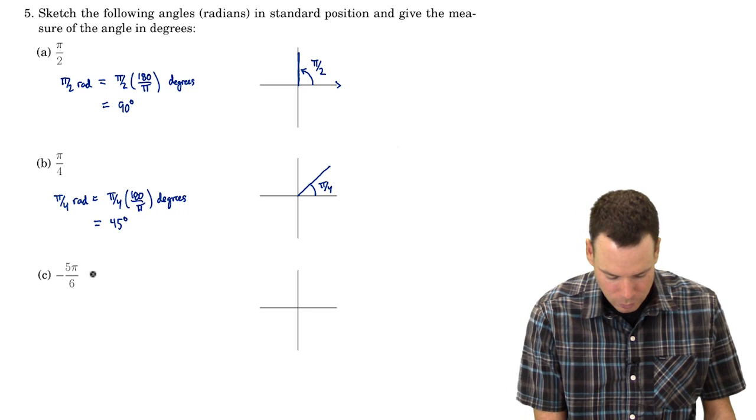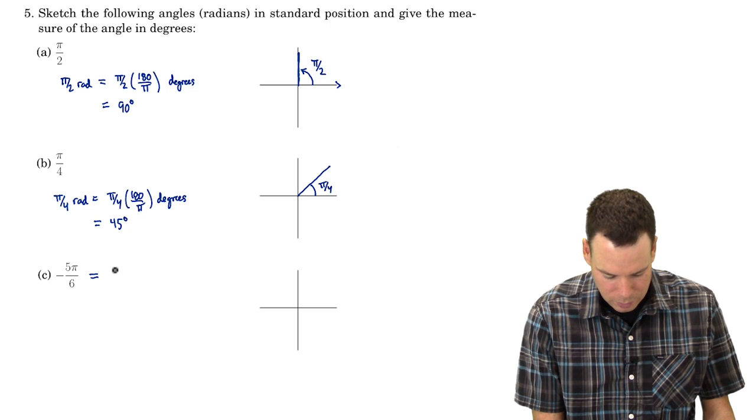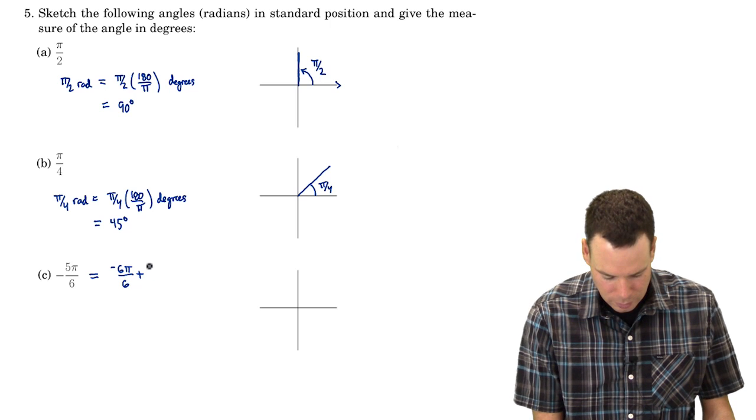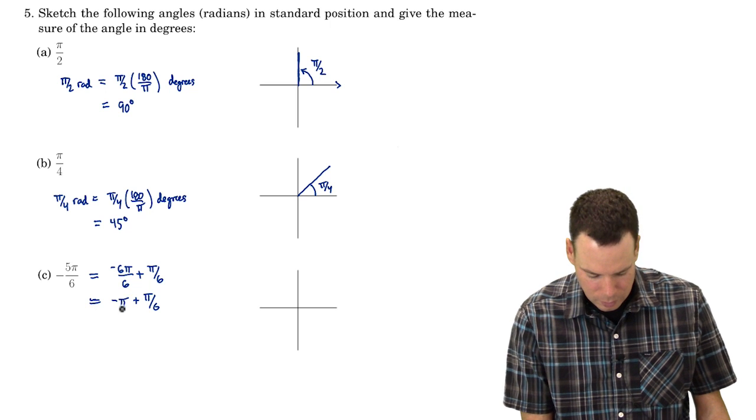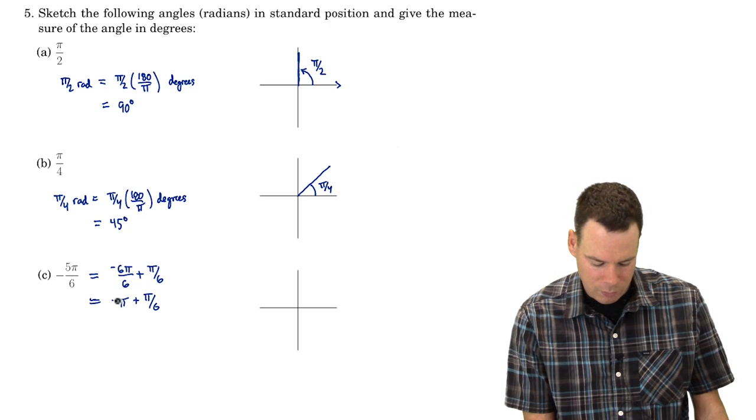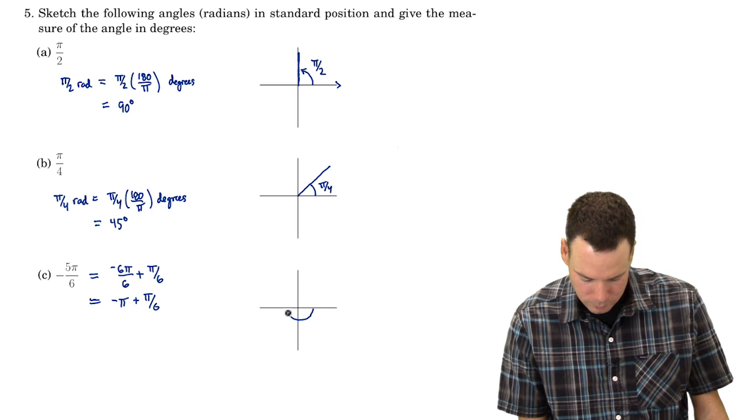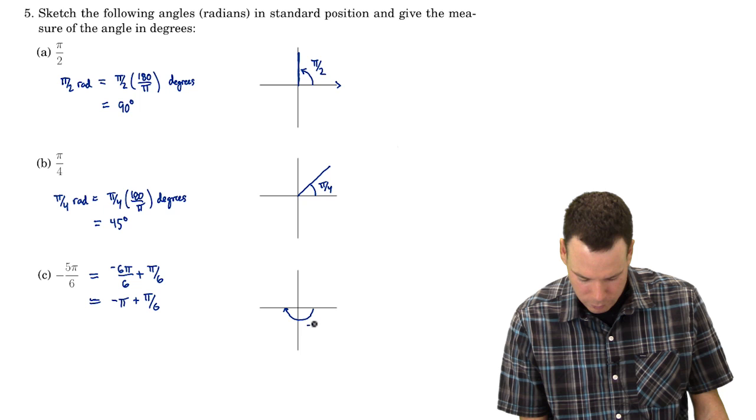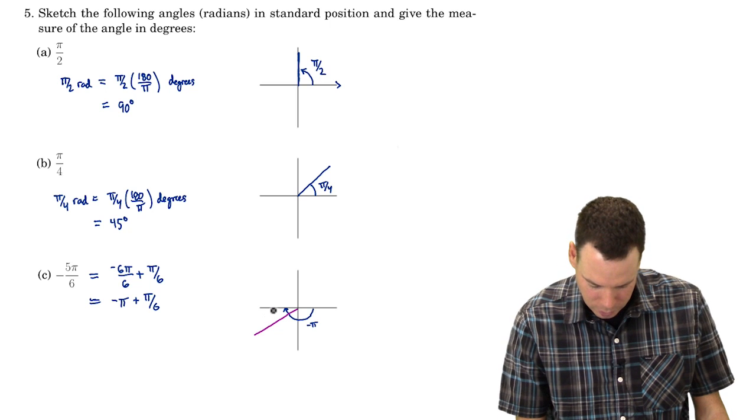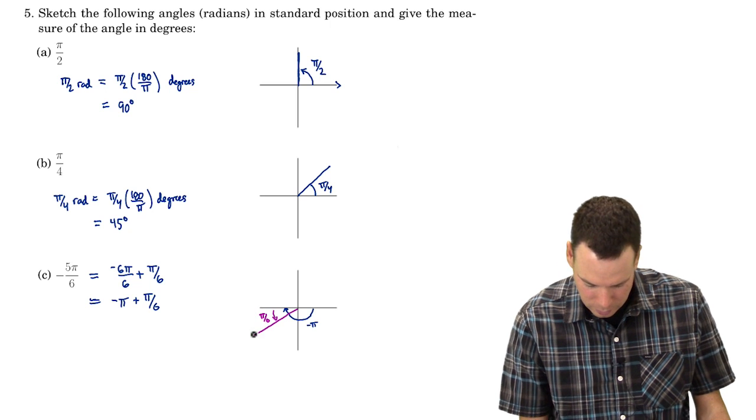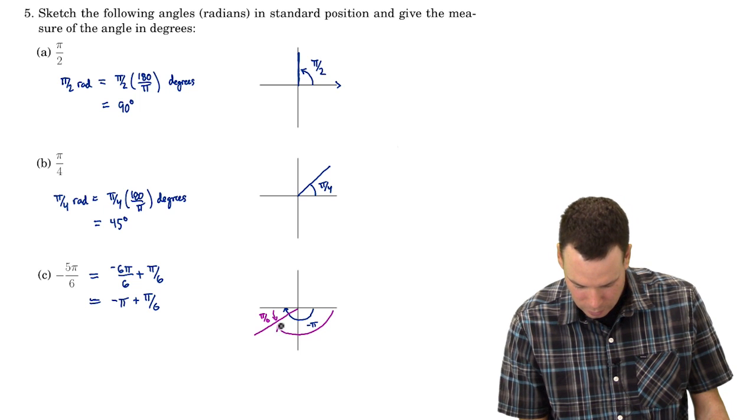What about negative 5π/6? Well, I can think about this as negative 6π/6 plus π/6. Or in other words, it's negative π plus π/6. So what does that mean? It means π is a half a rotation, so it's a half a rotation in the clockwise direction. So that's negative π. But I went too far. I need to come back π/6. So if I come back π/6, then I get what I want. My angle here is negative 5π/6.